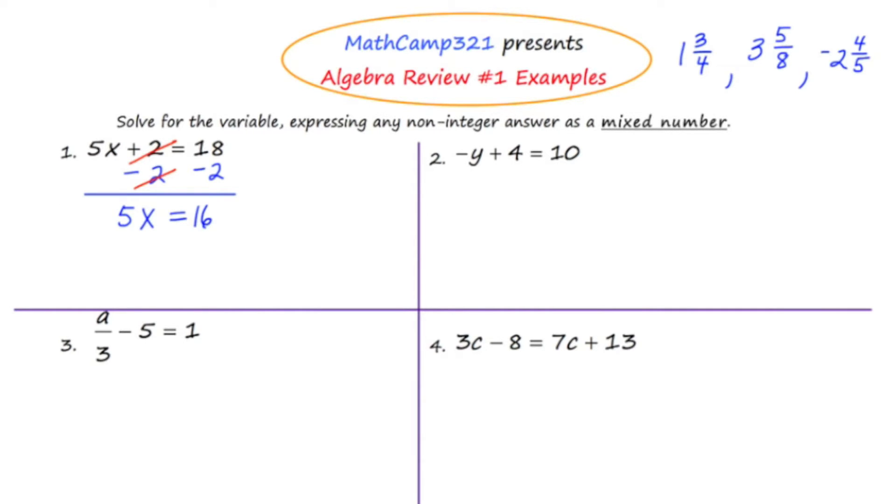Now, to get x completely isolated, I'm going to divide both sides by 5. The 5s will cancel out, and I'm left with x is equal to 16/5, which is not a mixed number, so I need to think about what that mixed number would be. How many times does 5 fit into 16? The answer to that is 3, with 1 left over. So, the mixed number equivalent of 16/5 is 3 and 1/5.